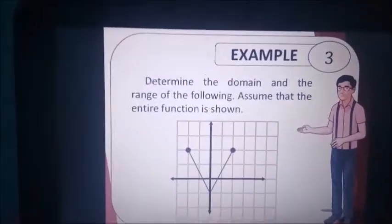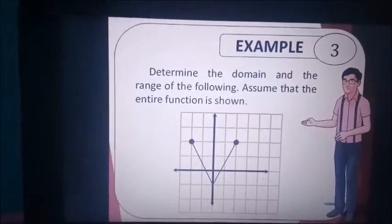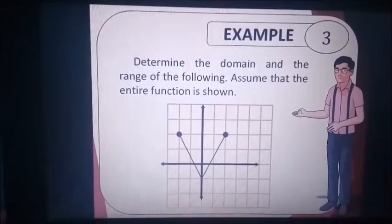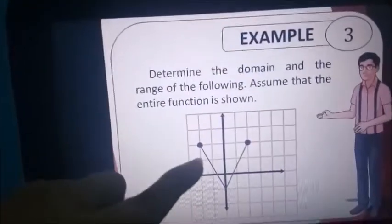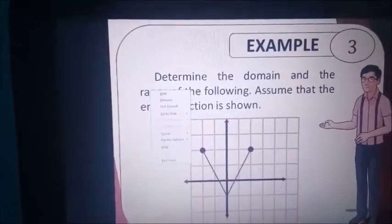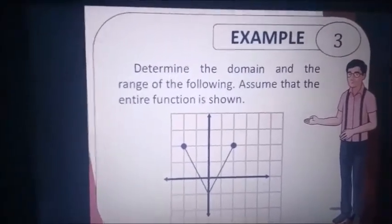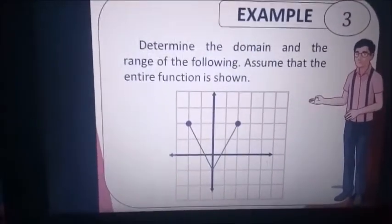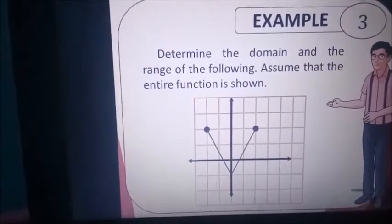So first, you're going to find the point. We have the point here. What point is it? It is the ordered pair negative 2 and 2.